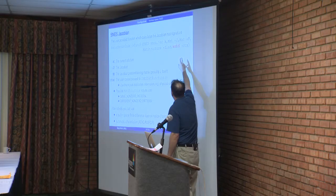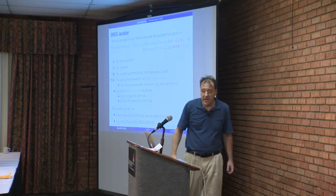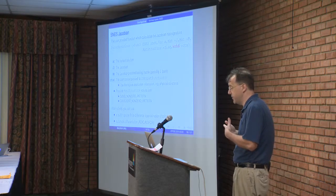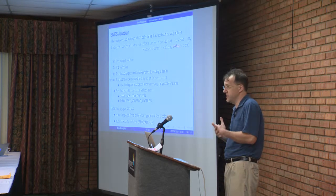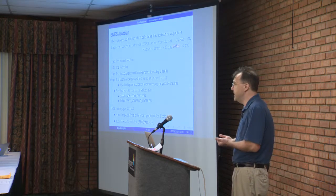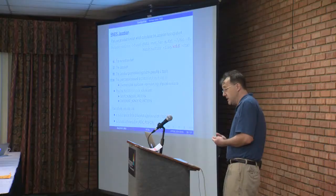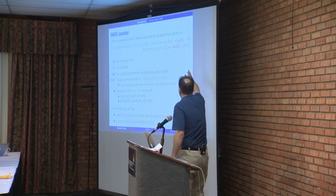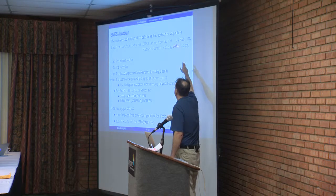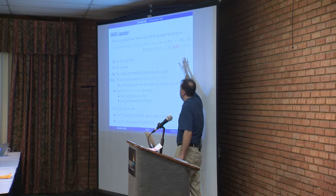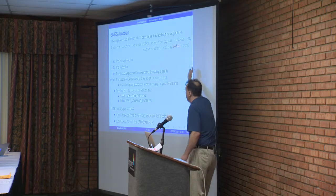Why two matrices? Often in building preconditioners, you don't actually want to use the true linear operator to construct the preconditioner — you want to use an approximation that's a lot sparser. Or you may be doing matrix-free with your true operator and providing a sparse matrix approximation from which to build a preconditioner like algebraic multigrid or ILU. So we always have these two built-in matrices. The first one defines the linear system; the second is what you want to use to construct a preconditioner — and often the second one will just be the same as the first.